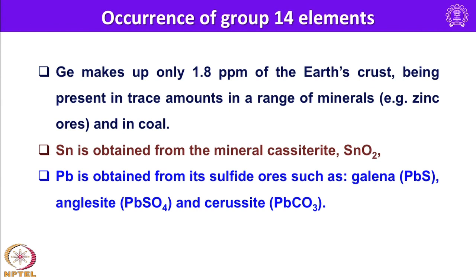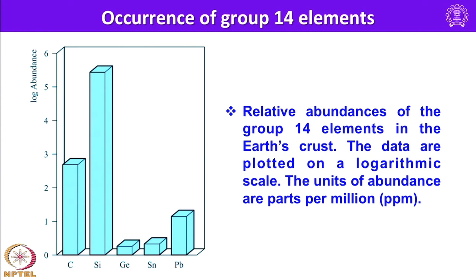Looking at the relative abundances and sources of the group 14 elements in the earth's crust, silicon is the most abundant among all group 14 elements, while germanium and tin are present in very small quantities.